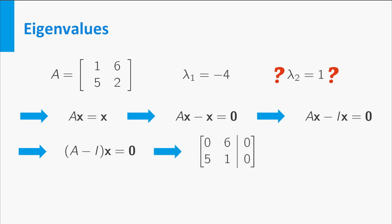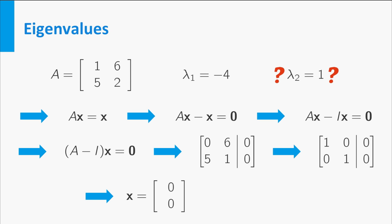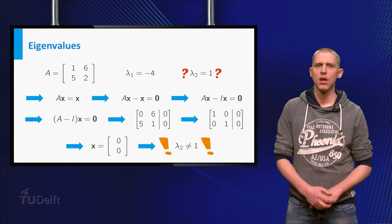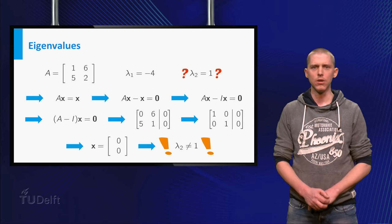Now we have a new matrix A minus I times X equals 0 as equation. This equation you can solve using the augmented matrix. The reduced row echelon form is shown on the right. But this means that the only solution is the zero vector. So you can conclude that there are no non-trivial solutions and 1 is not an eigenvalue of A.